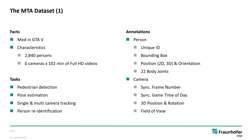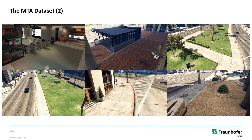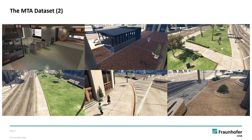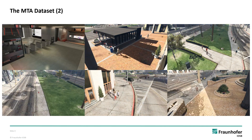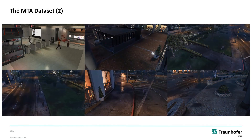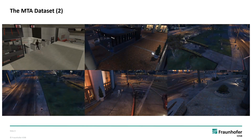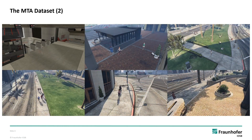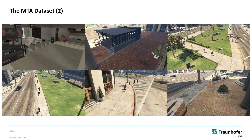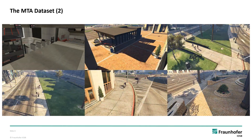For every camera we obtained a synchronized frame number and game time of the day. We also saved its 3D position, rotation, and field of view. Here you can see a time-lapse video of the MTA dataset across all six cameras. You can see that periods of day and night as well as rainy and sunny weather are contained.